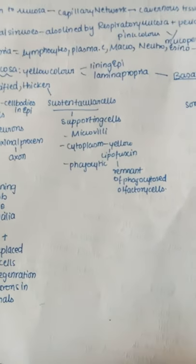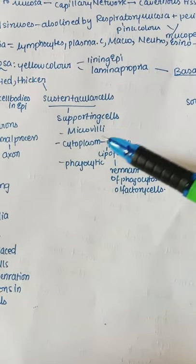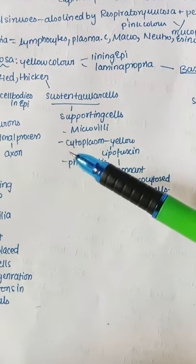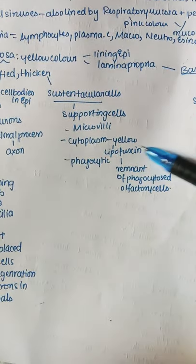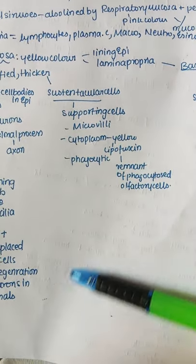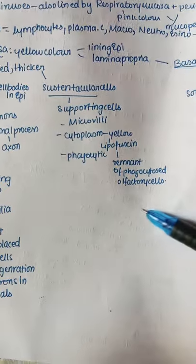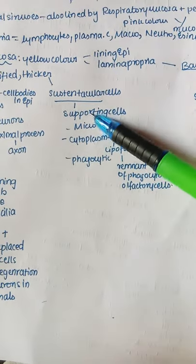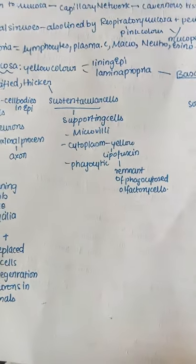Sustenticular cells are supporting cells that have microvilli. Their cytoplasm is yellow in color due to lipofuscin, which is a remnant of phagocytosed olfactory cells. The sustenticular cells are phagocytic.